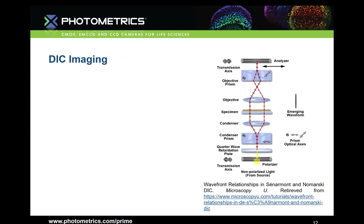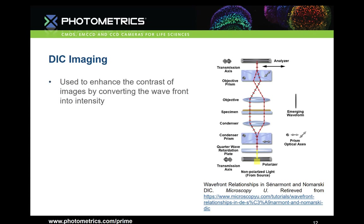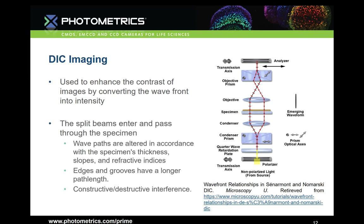Stepping back to look at contrast enhancement techniques, one of the most popular is differential interference contrast. This is made possible with the Nomarski prism. The prism consists of two parts: one part splits the light to be parallel to the surface of the prism, and the other orients the optical axis to be oblique to the surface, generating a focal point outside of the prism. Light comes in and is split into two parts; those waveforms interact with the sample and are then recombined, causing constructive and destructive interference, which makes denser areas look darker in the sample.